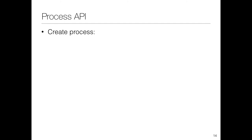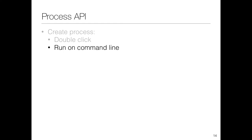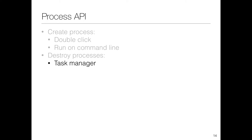There are a few important API calls any OS should support for process management. The first is creating processes — whenever we double-click a program, a process is created from a program, or we can run a command line. This is possible only because the operating system provides an API to create a new process. Once we've created something, we also need an API to destroy a process — via task manager or command line — all of which works because the OS provides an abstraction in the form of an API.